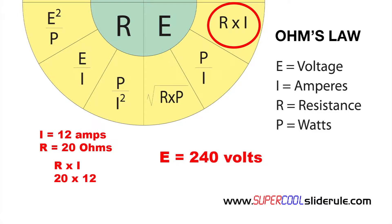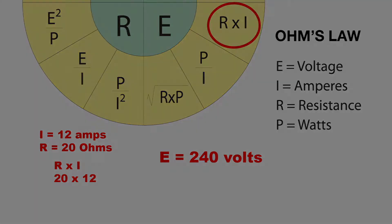So 12 amps with a resistance of 20 Ohms gives us a voltage of 240. This concludes our tutorial, but please stay tuned as we introduce the super cool slide rule. This is the most useful tool in the HVAC industry, guaranteed to save you lots of money by saving you lots of time. Thanks for watching.